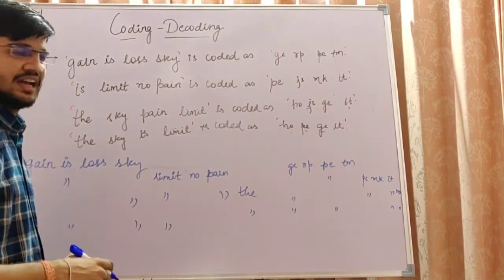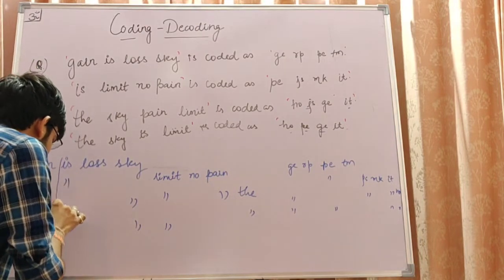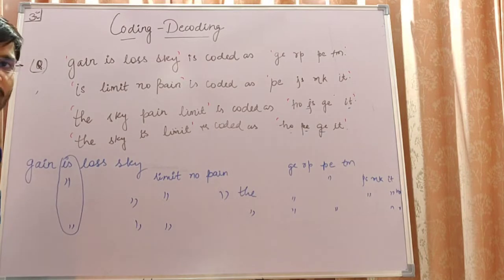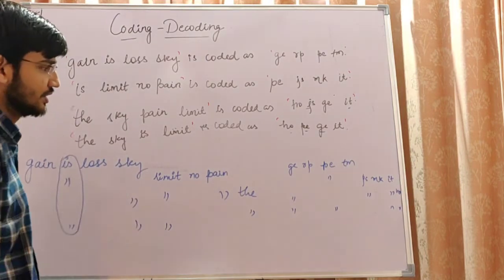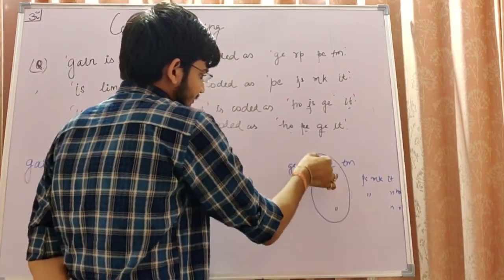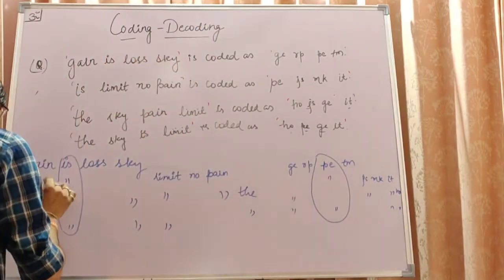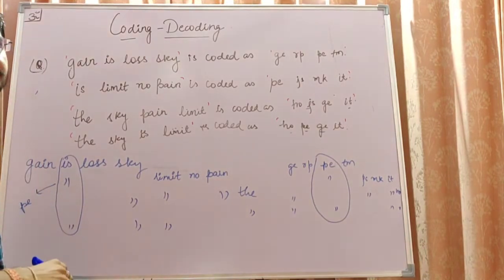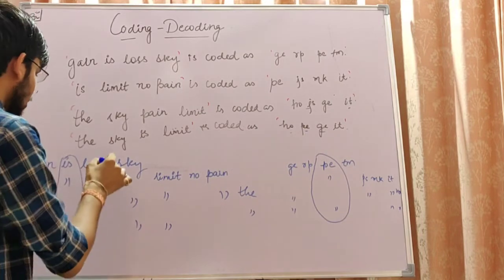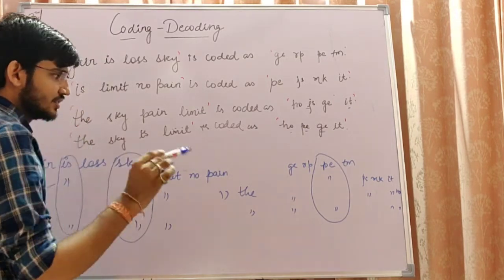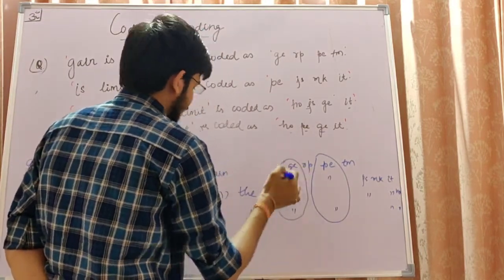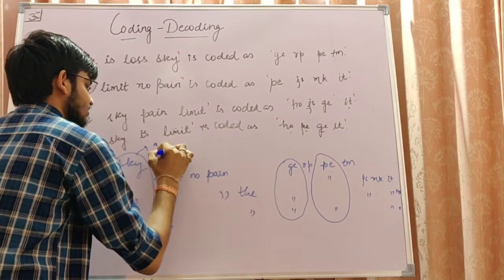Now see what is common. First, second and fourth line have 'is' in common. So what is 'is' coded as? PE. Next, sky. First, third and fourth have sky. That means sky stands for GE.